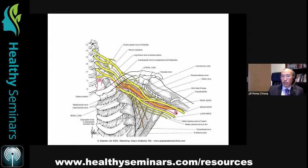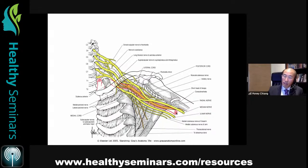This is just to set the groundwork — we're talking about nerves in terms of three different flavors: sensory, motor, and autonomic, or in other words, sympathetic.